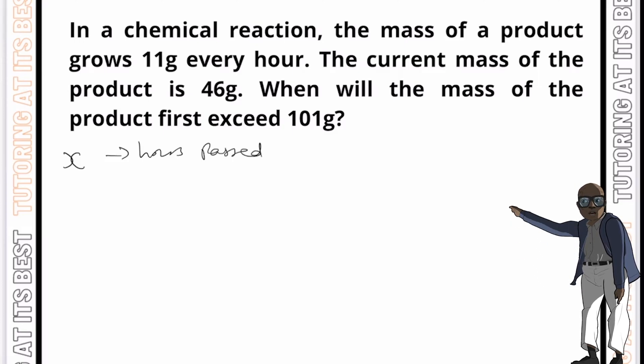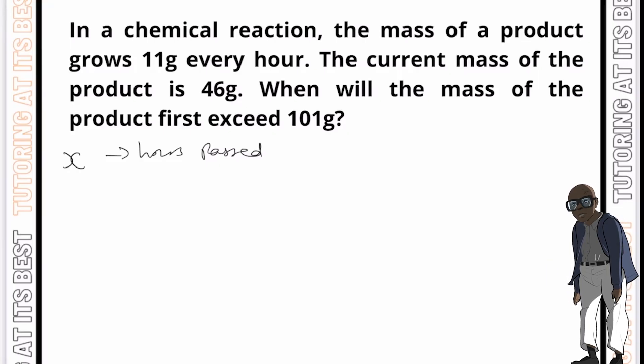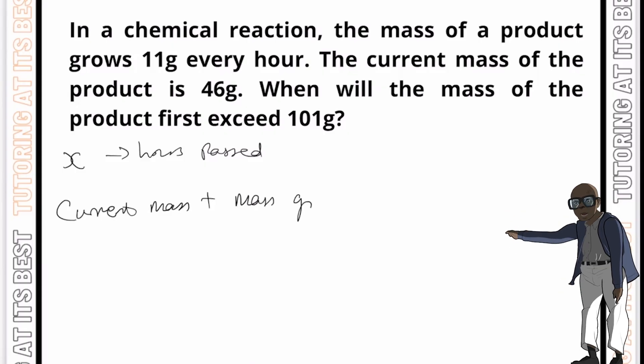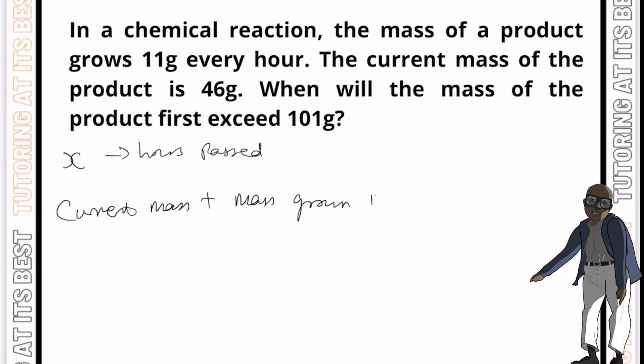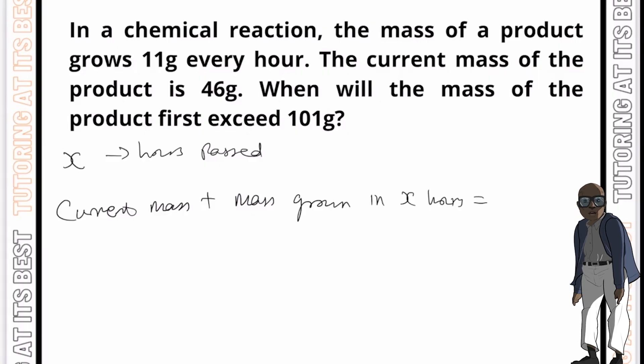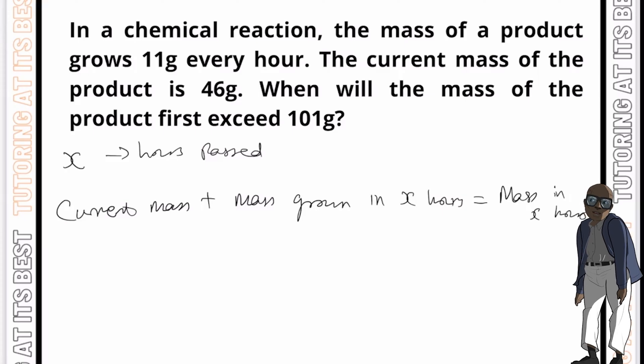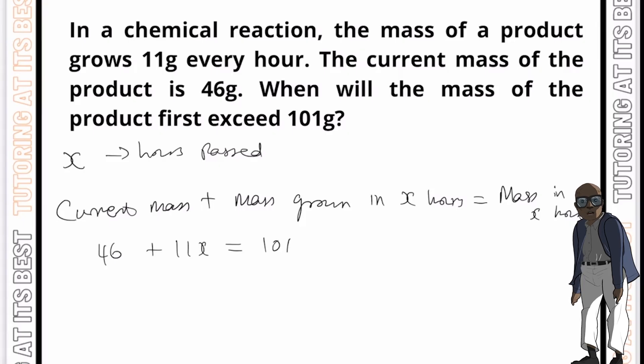And we can then set up an equation using the information given in the problem. And the equation should represent the relationship between the current mass and the mass of the product x hours from now. So we're going to get our current mass, and we're going to simply add this to the mass grown in x hours, and we're going to equal this to the mass in product in x hours. Marvellous. So what do we have? We've got 46 plus 11x, which then equals 101. And so now we can solve x.